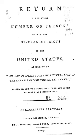Black or African American: A person having origins in any of the black racial groups of Africa. It includes people who indicate their race as Black, African American, or provide written entries such as Kenyan, Nigerian, or Haitian. American Indian and Alaska Native: A person having origins in any of the original peoples of North and South America, including Central America, and who maintain tribal affiliation or community attachment.